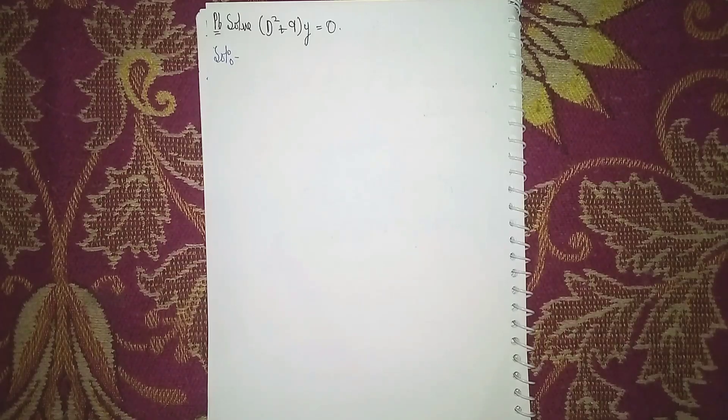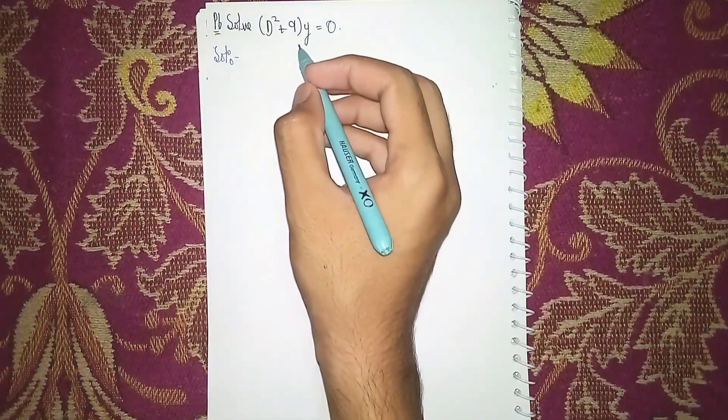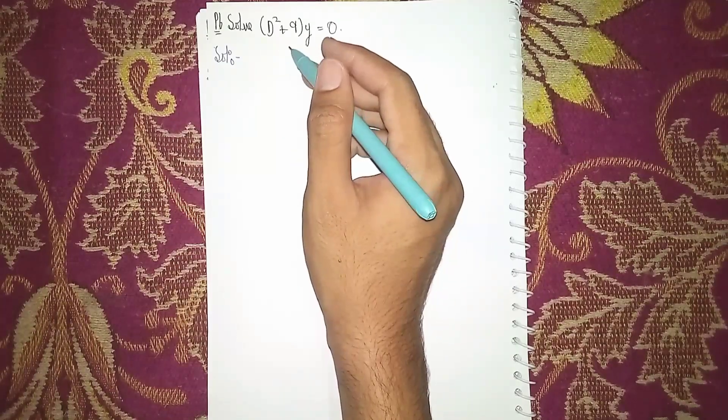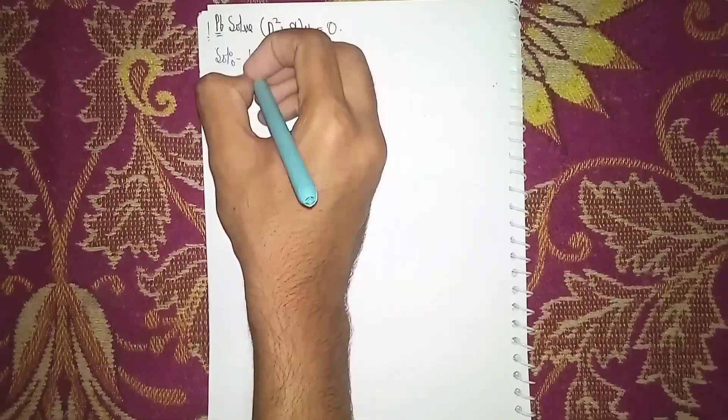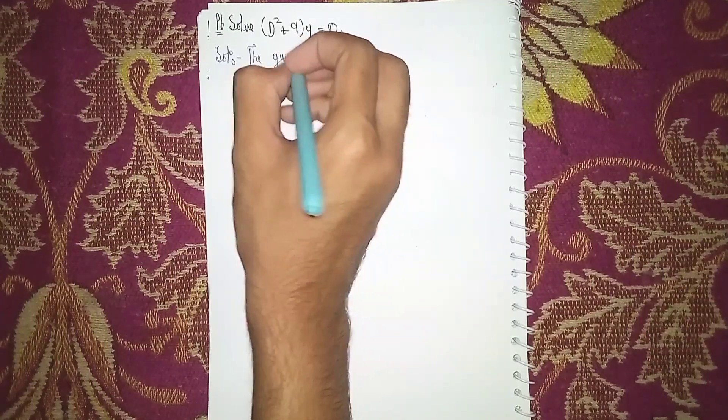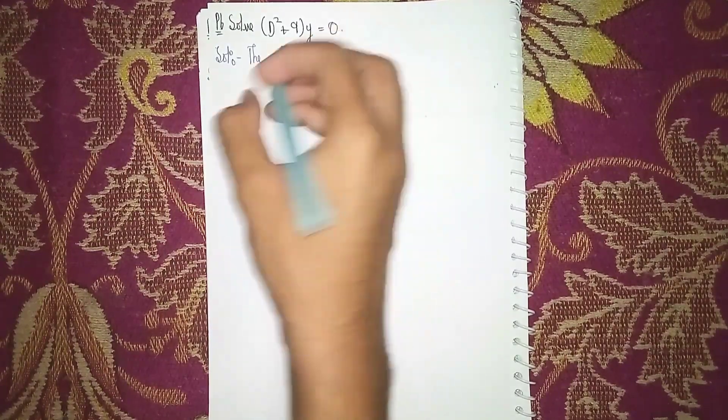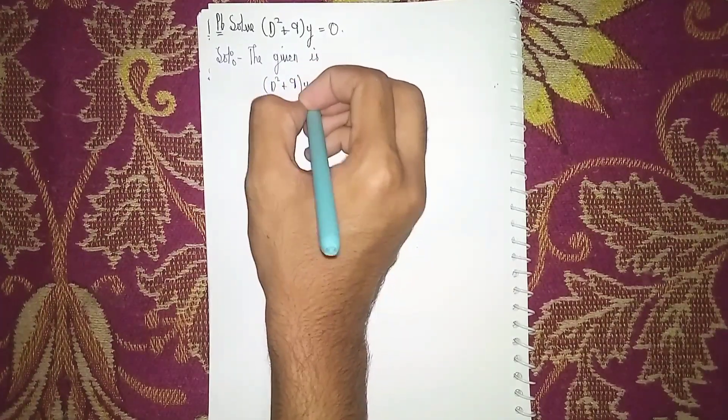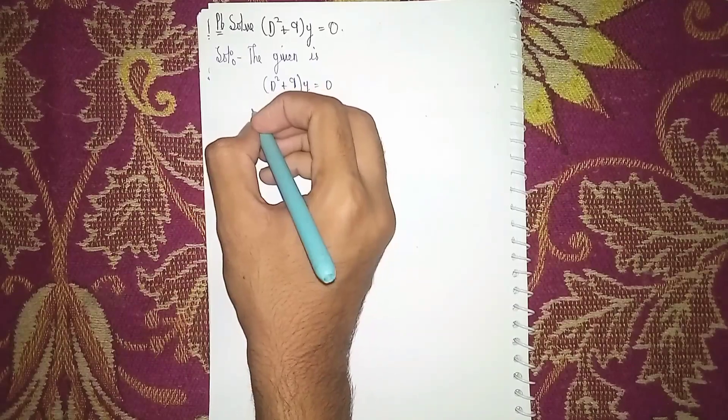Hello everyone, welcome back to my channel. This question is: solve d² + 9y = 0. This is a homogeneous linear differential equation. The given equation is d² + 9y = 0.